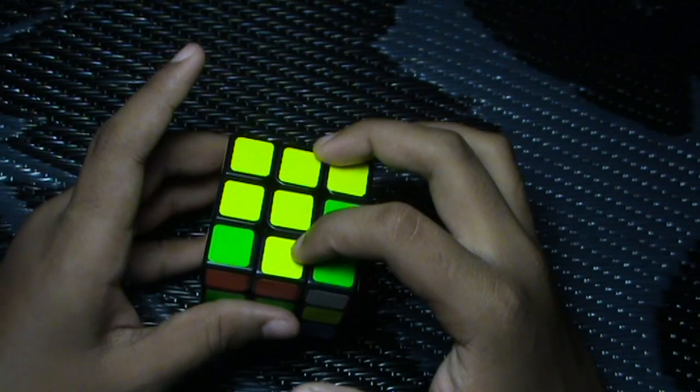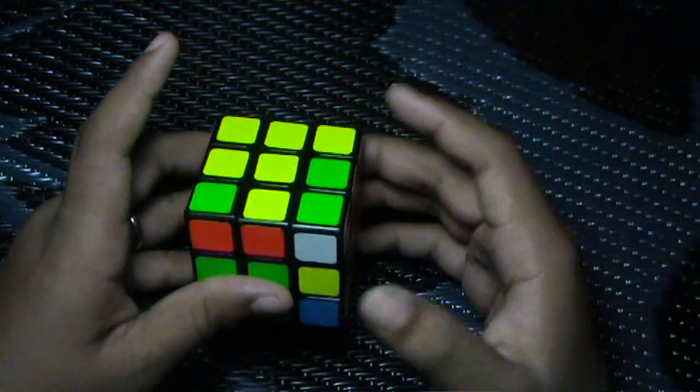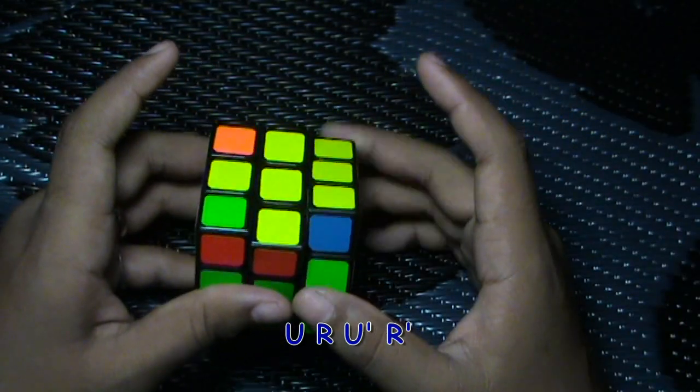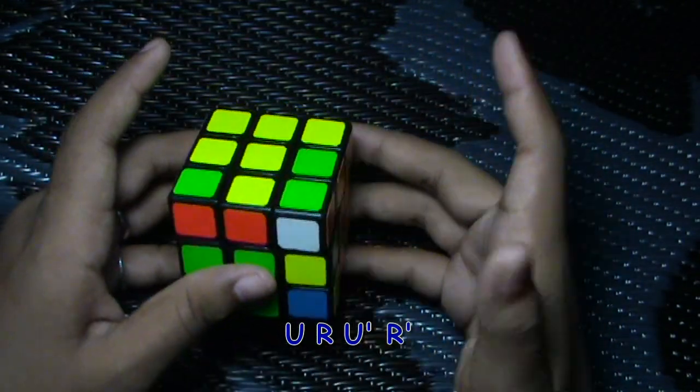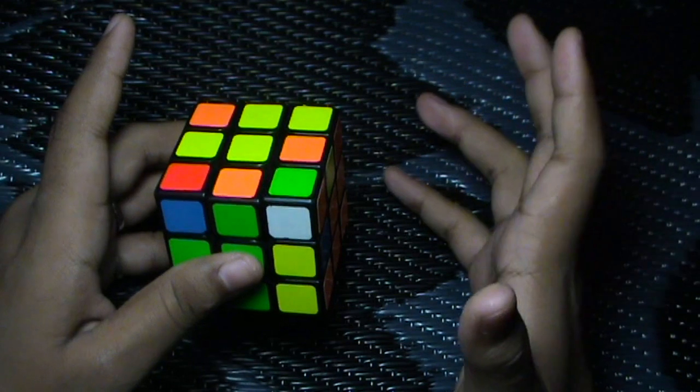This is the most easiest case where you have all of the three edges on the U layer. So you just normally insert it like that and you will have all of the edges on the U layer.